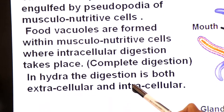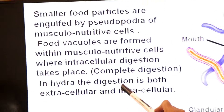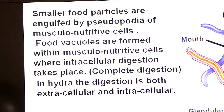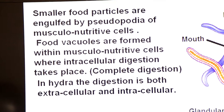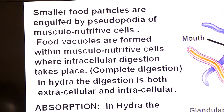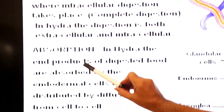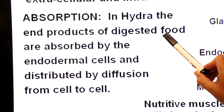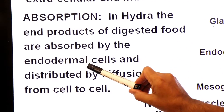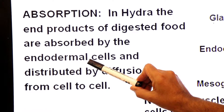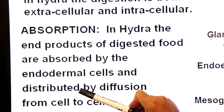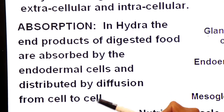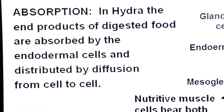Remember: in Hydra, digestion is both extracellular and intracellular. After digestion, absorption occurs. The end products of digestion are absorbed by endodermal — gastrodermal — cells, and then distributed by diffusion from one cell to another cell.